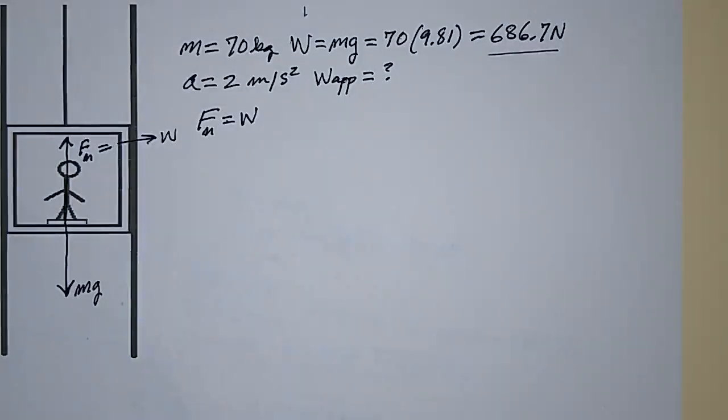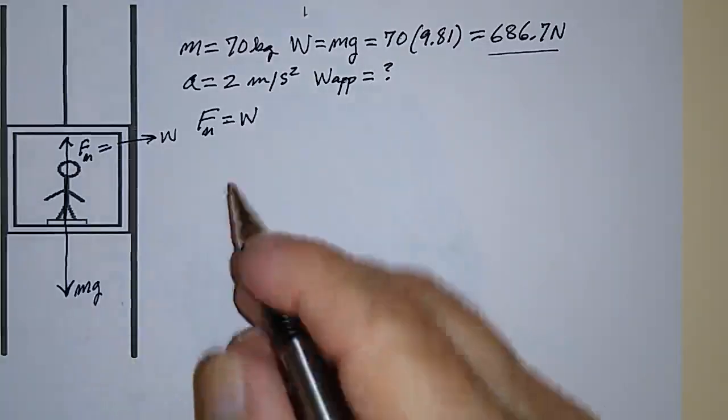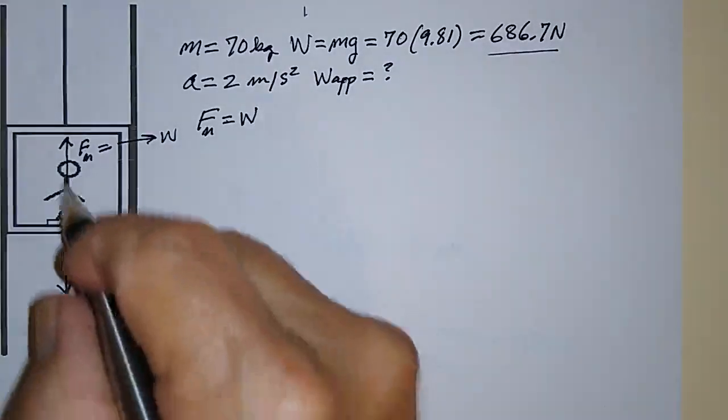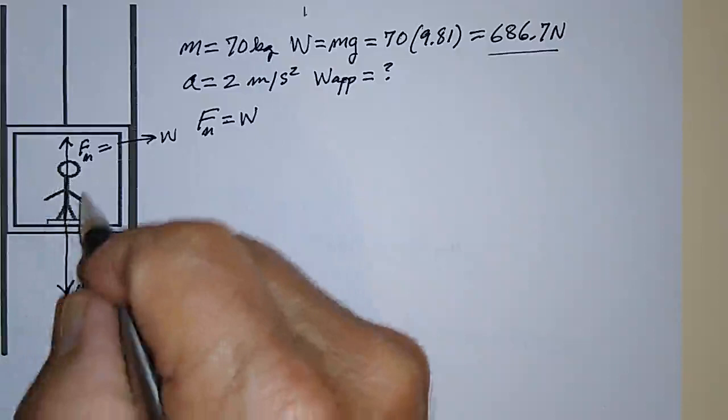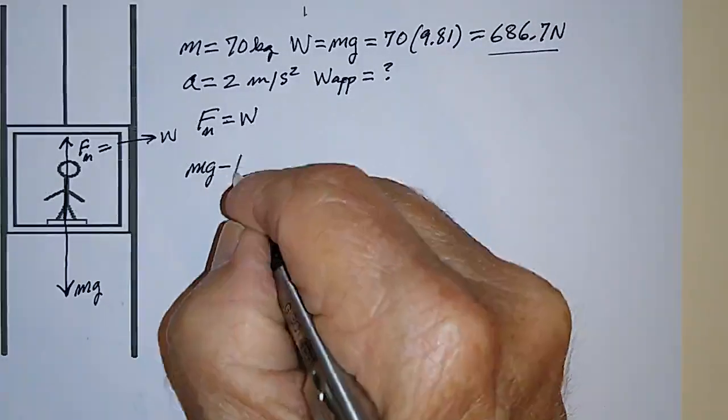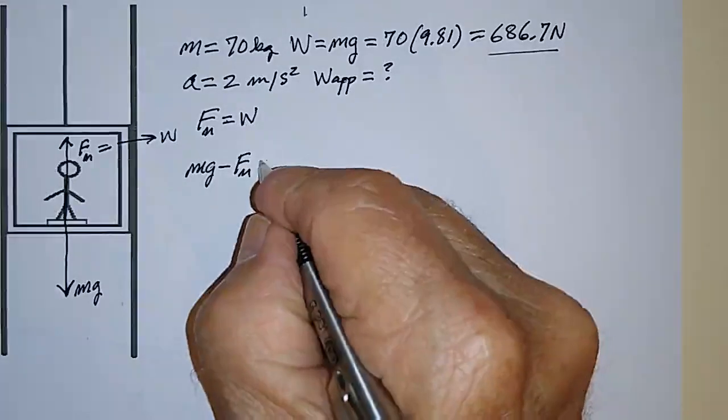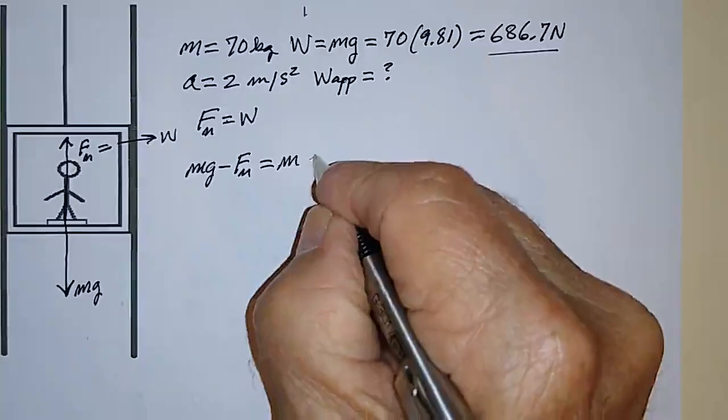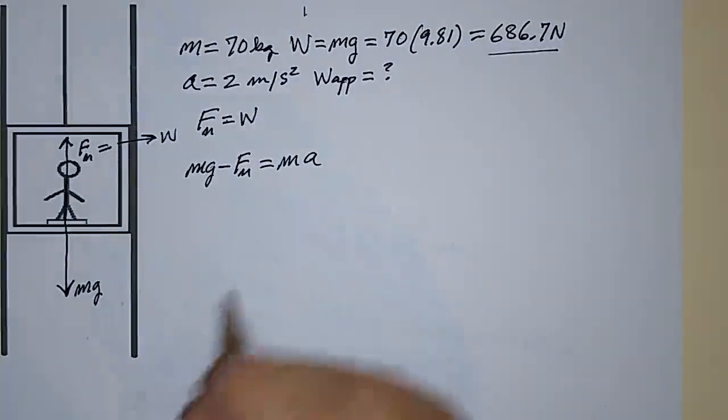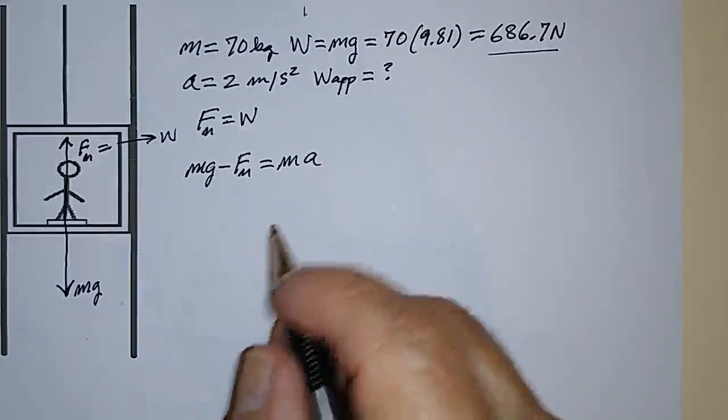How do we handle that? Well, we use Newton's second law and we write the net force acting on this mass, this guy here, and that's mg minus Fn, the force that the scale exerts on him, has to be equal to ma.